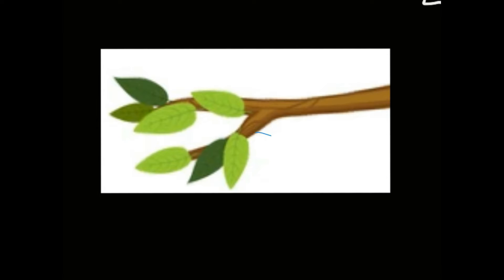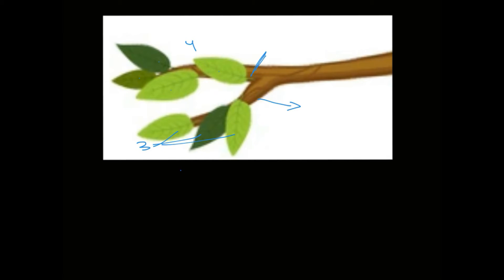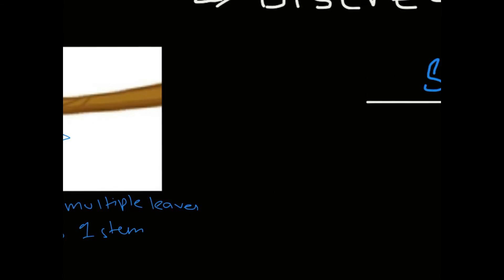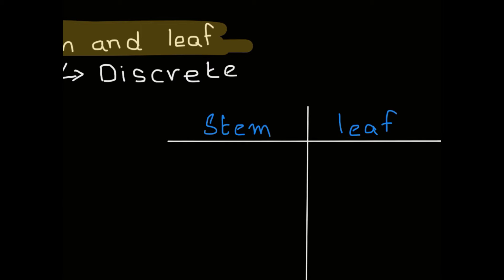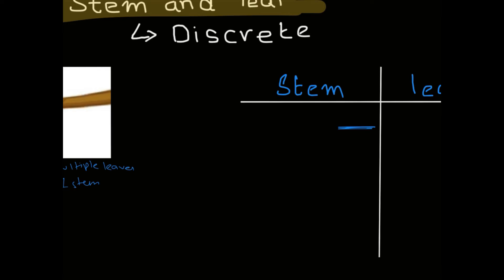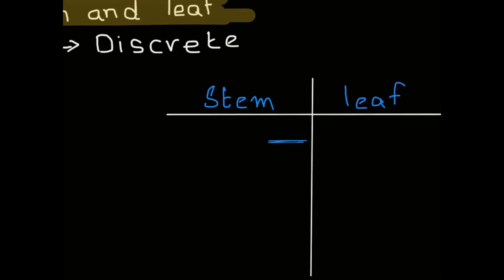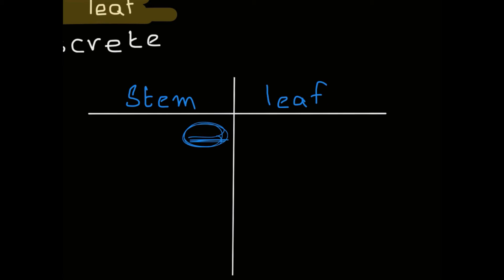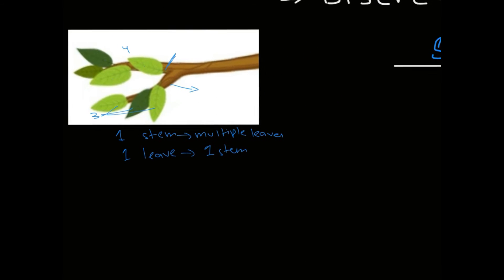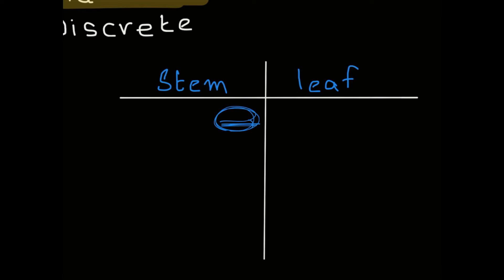In the tree picture, one stem can have multiple leaves — for example, one stem has three leaves and another has four. So one stem can have multiple leaves, but one leaf can only have one stem. This means in the stem section there can only be one number, whether it's two or three digits. In the leaf section, however, we can have various numbers.